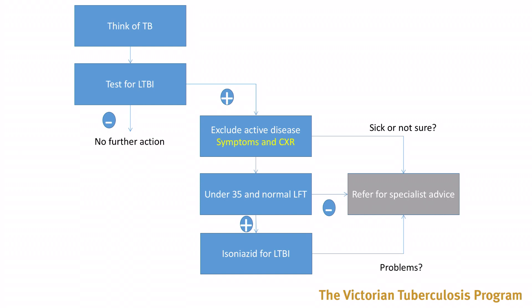Throughout these talks, we'll keep returning to this flowchart, which summarizes the approach that we'll be using. The starting point is to think about which of your patients is at risk for having latent TB, then offering a test where it's appropriate. When a person has a positive test, those who are most likely to benefit safely from treatment can be offered a course of antibiotic therapy, while at any stage in this process, you can refer for specialist management if there are issues or uncertainties.